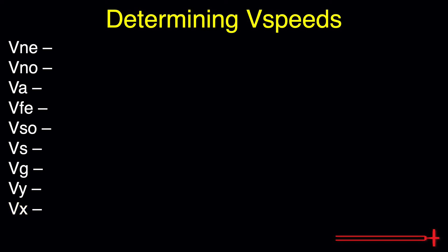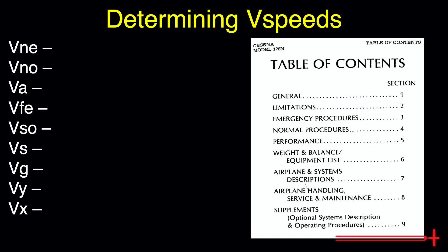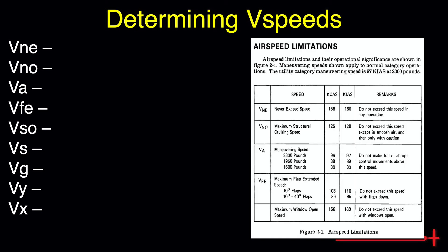These limitations will be found in our POH. If we open to the table of contents, we will begin our search in section 2, limitations. We will look for both the airspeed limitations chart and airspeed indicator markings chart, as they both give us a few different V-speeds. Beginning with the airspeed limitations chart, we can refer to the indicated airspeeds column, as we will rarely know our exact calibrated airspeed during flight.